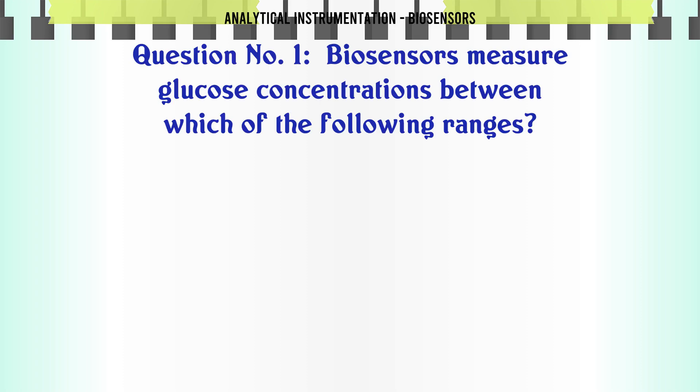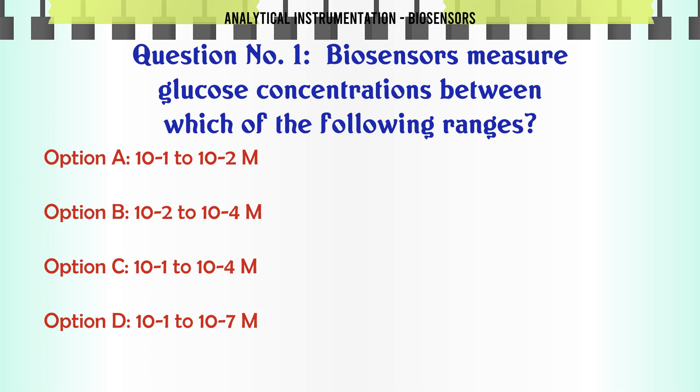Biosensors measure glucose concentrations between which of the following ranges? Option A: 10^-1 to 10^-2 M. Option B: 10^-2 to 10^-4 M. Option C: 10^-1 to 10^-4 M. Option D: 10^-1 to 10^-7 M.